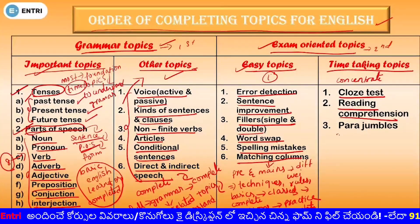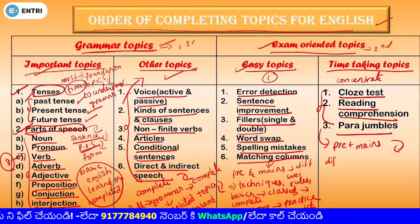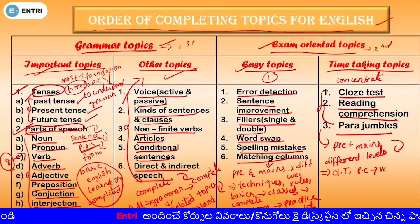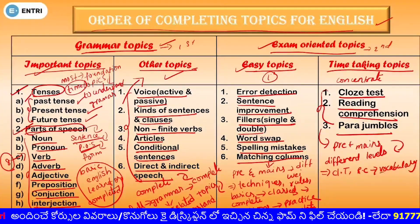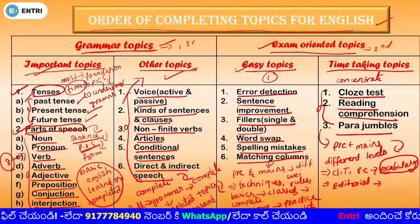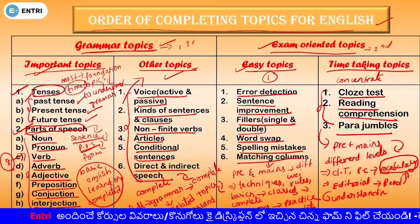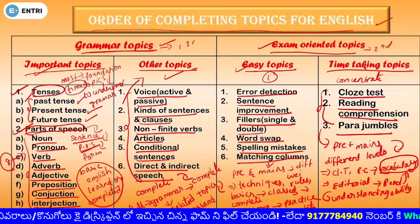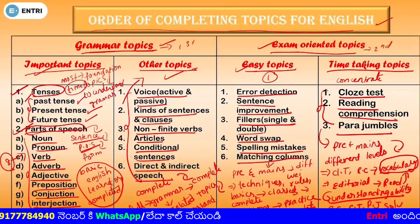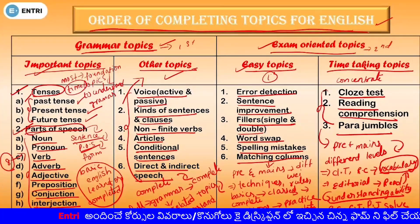Cloze tests, reading comprehension, and para-jumbles — these three topics also exist in prelims and mains at different levels. That's why you need to concentrate on these time-taking topics and improve the preparation process. Your reading should be on a daily basis — like editorials or story books — to improve vocabulary and reading ability, and improve your understanding. If you use para-jumbles, use techniques like connectors. So this is all about the order of completing topics for English.